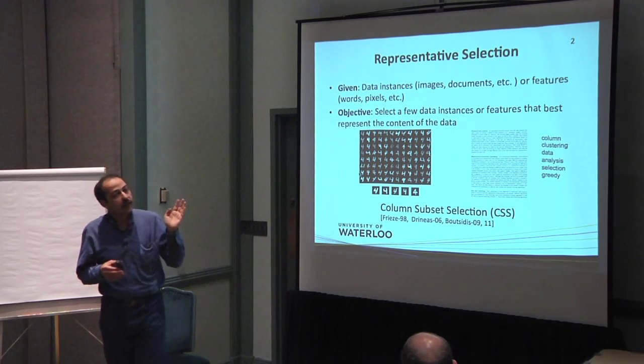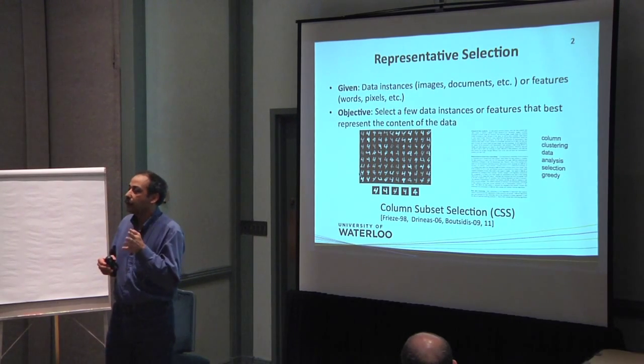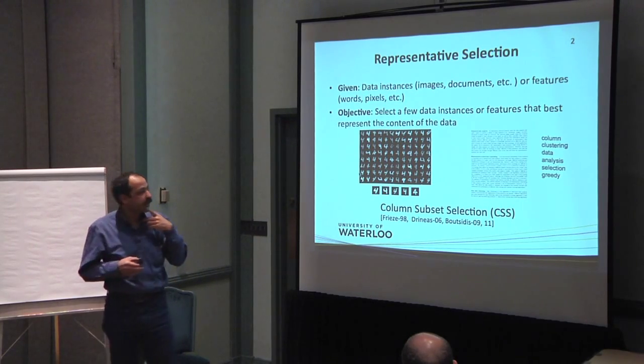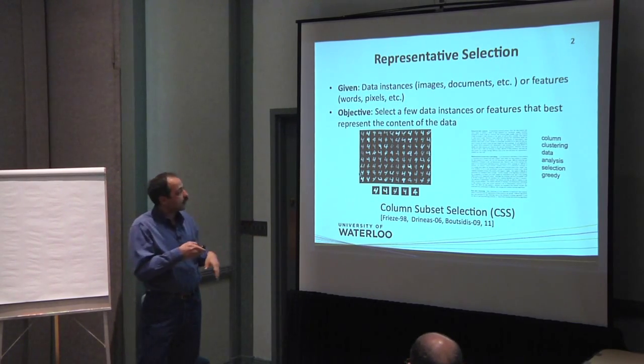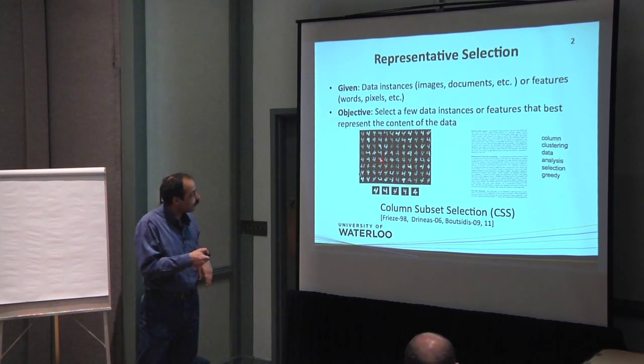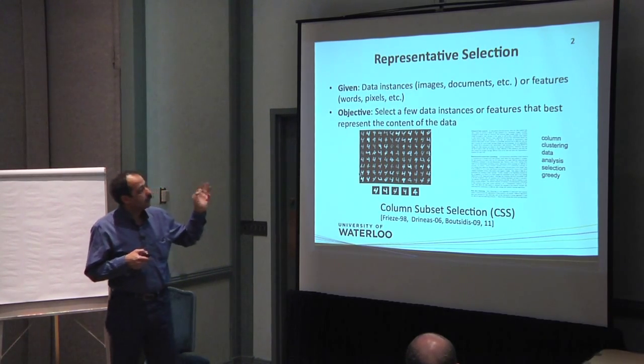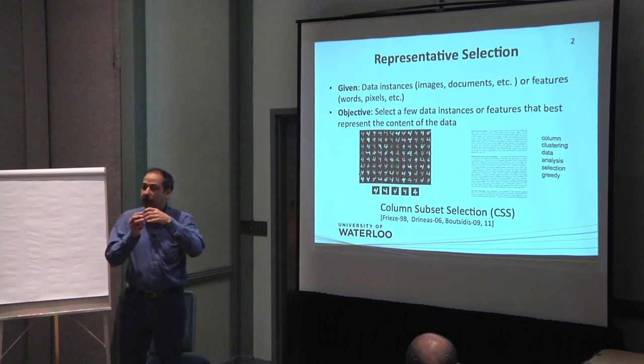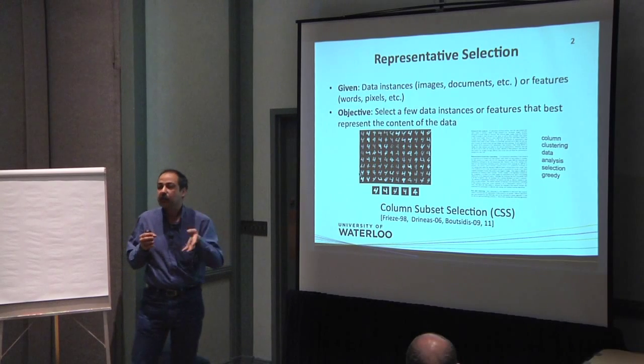For example, in this example here, data points are some handwritten digits and assume that they have been stored in a matrix such that each column is one of these handwritten digits. Selecting a subset of columns gives you,